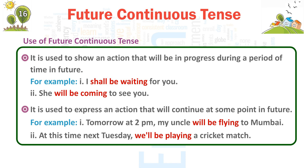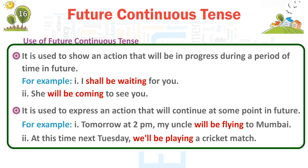It is used to express an action that will continue at some point in the future. For example: first, 'Tomorrow at 2pm, my uncle will be flying to Mumbai.' Second, 'At this time next Tuesday, we will be playing a cricket match.'